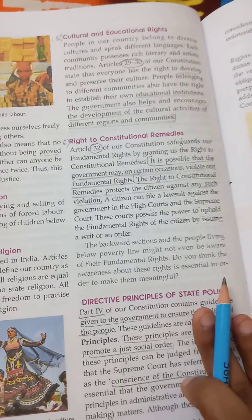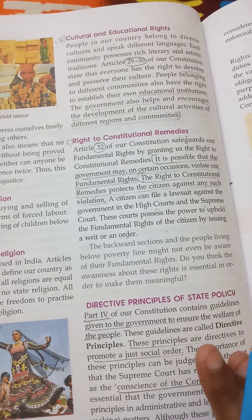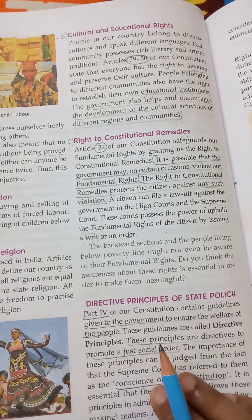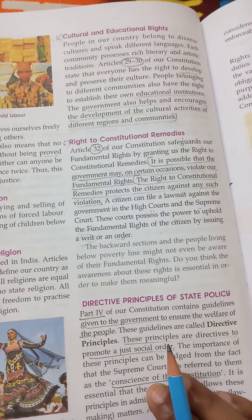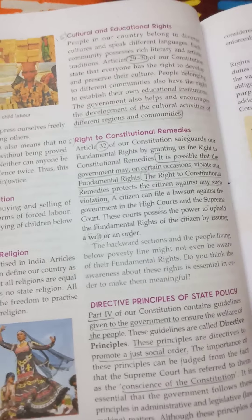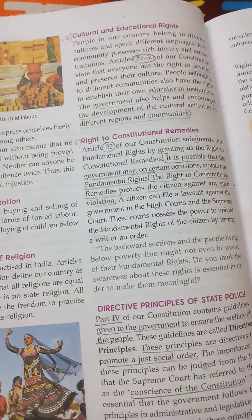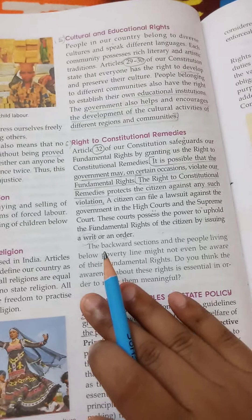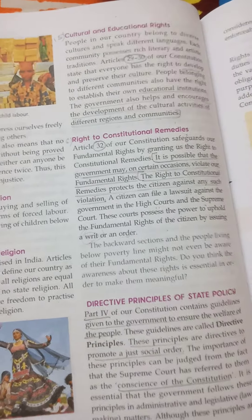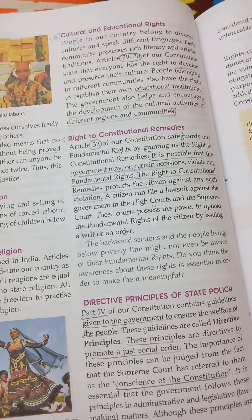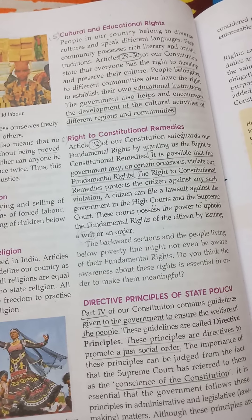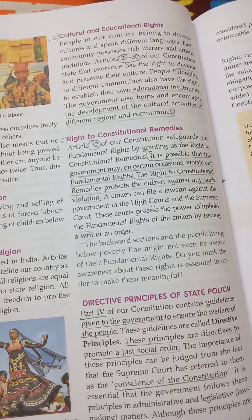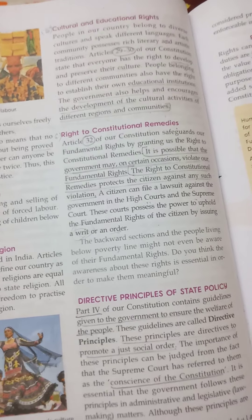How will the court give you protection? The court has a formula — writs or orders. There are certain writs mentioned in our constitution. Since this is for 8th class I will not go into detail, but I will simplify it. We have certain writs — for example, if any kind of fundamental right has been violated.